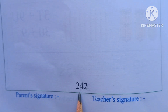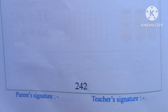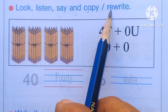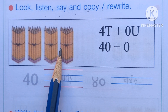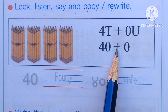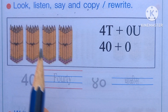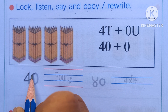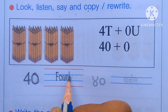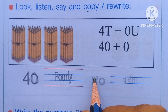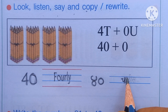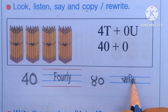Page 242. Look, listen, say and copy or rewrite. 4 tens plus 0 units means 40 plus 0, equals 40. Write here: 40. Spelling: F-O-U-R-T-Y. In Marathi: 40, Chariso.